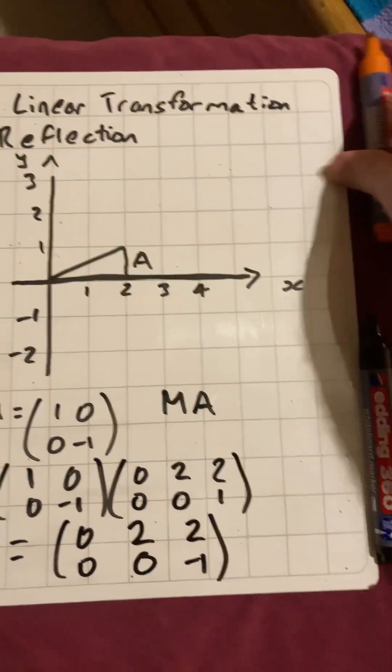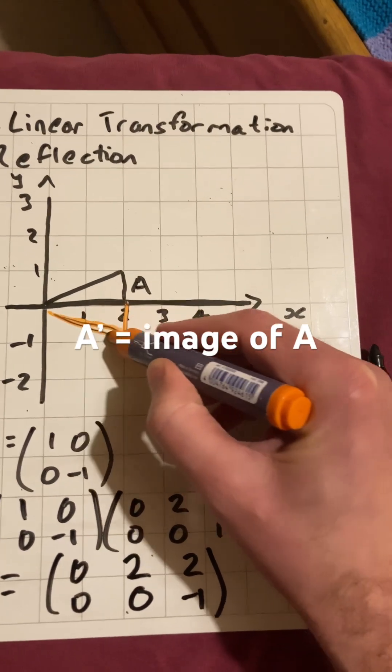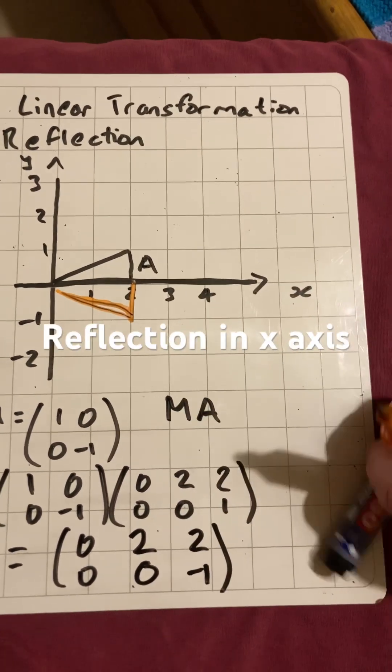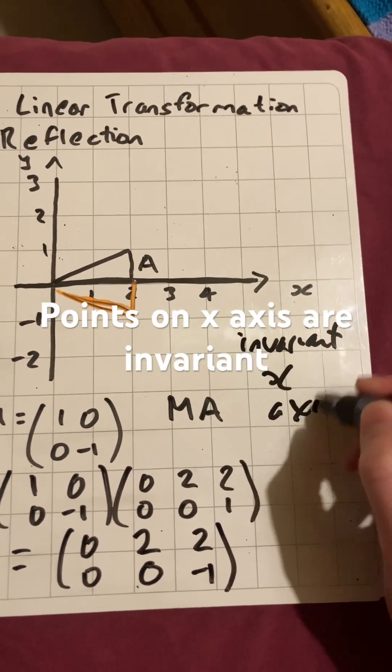So we'll actually see the image of A will be a reflection in the x-axis. So these points will be invariant, and it is a reflection in the x-axis.